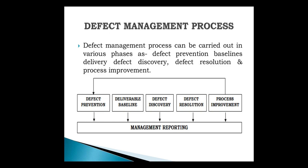Here is a diagram showing how the defect management process works. First is defect prevention, second is a deliverable baseline, third is defect discovery, next is defect resolution, and last is process improvement. Process improvement means all of these are part of the management reporting.